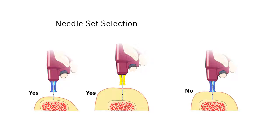If the needle set is inserted through the soft tissue and does not reach the bone, or the 5 mm mark is not visible above the skin with the tip of the needle set touching the bone, the needle set is too short. A longer needle set or alternate site should be chosen prior to penetration of the bone cortex. Using a needle set that is too short will increase the risk of catheter dislodgement leading to extravasation.